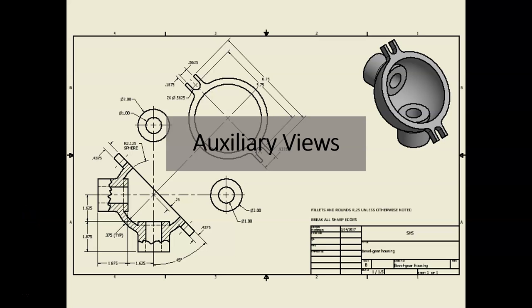We're going to have a look at module number five, which is the next module in the Introduction to Drafting class. Module number five covers auxiliary views. Auxiliary views are a form of orthographic view intended to show inclined or oblique surfaces — and features on those surfaces — in their true shape and size. We'll look at a short presentation with examples and guidelines, then finish with a look at the homework assignments.